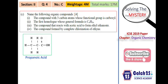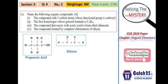The second question asks for the first homolog whose general formula is CₙH₂ₙ. CₙH₂ₙ is the general molecular formula of alkenes. The first homolog of alkenes must have at least 2 carbons, so the answer is ethene.